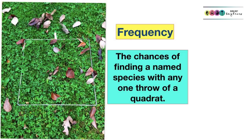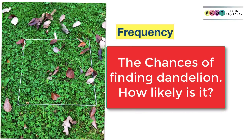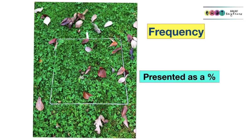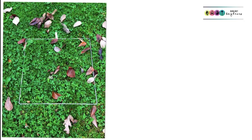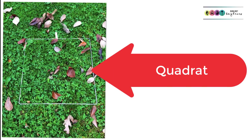The first method of quantitative analysis is determining frequency. This is the chances of finding a named species when you throw a quadrat — for example, the chances of finding dandelion in your particular study area — and it's usually represented as a percentage. An essential tool needed to determine frequency is the quadrat, which is basically a square frame; the one we used was 0.5 metres by 0.5 metres.